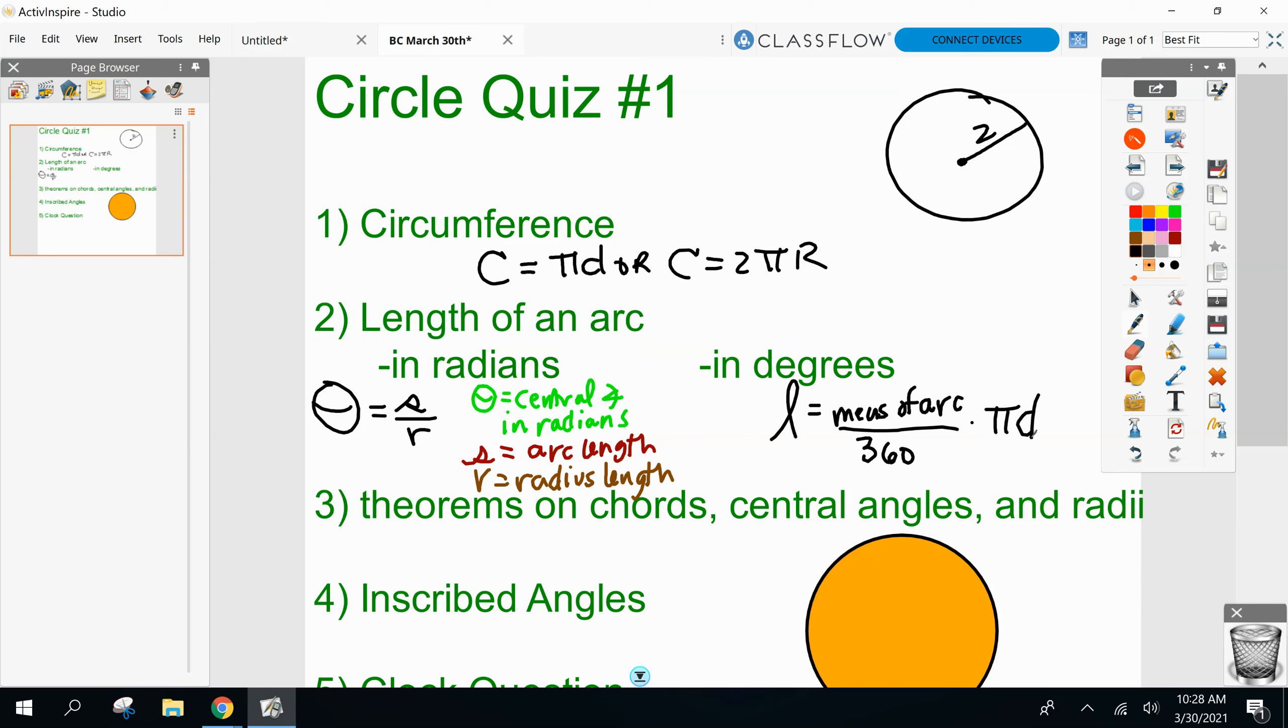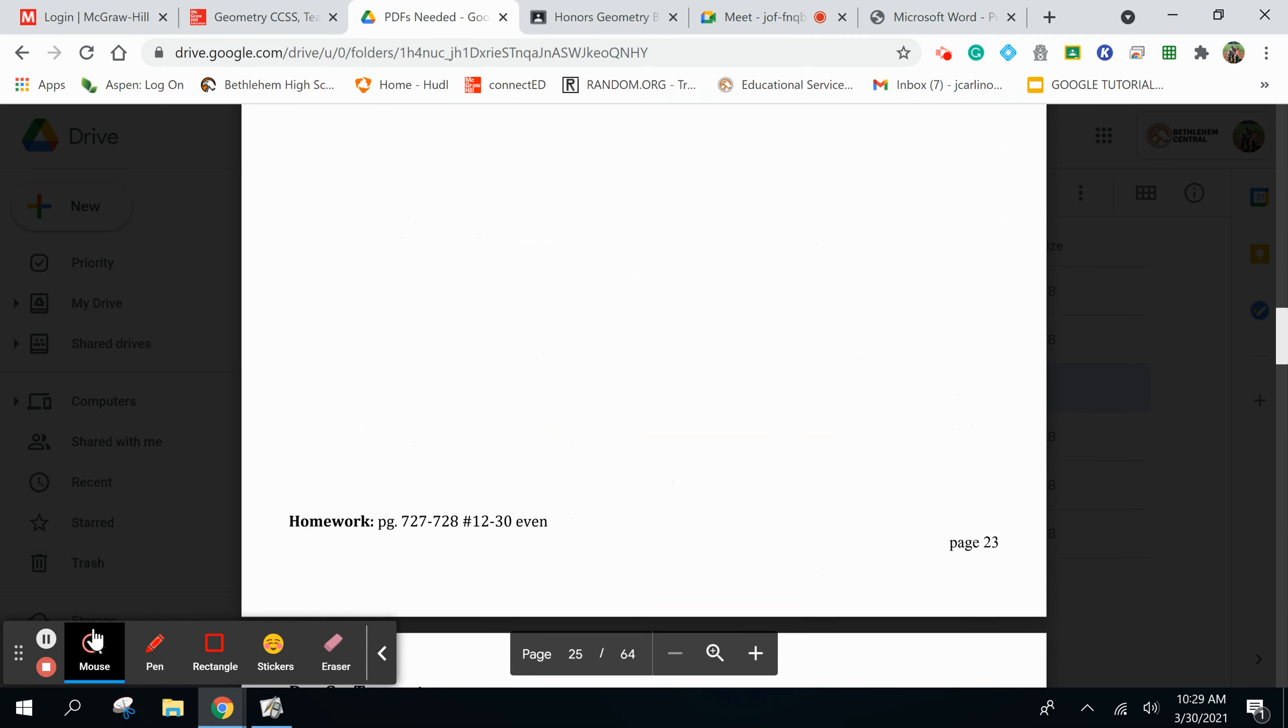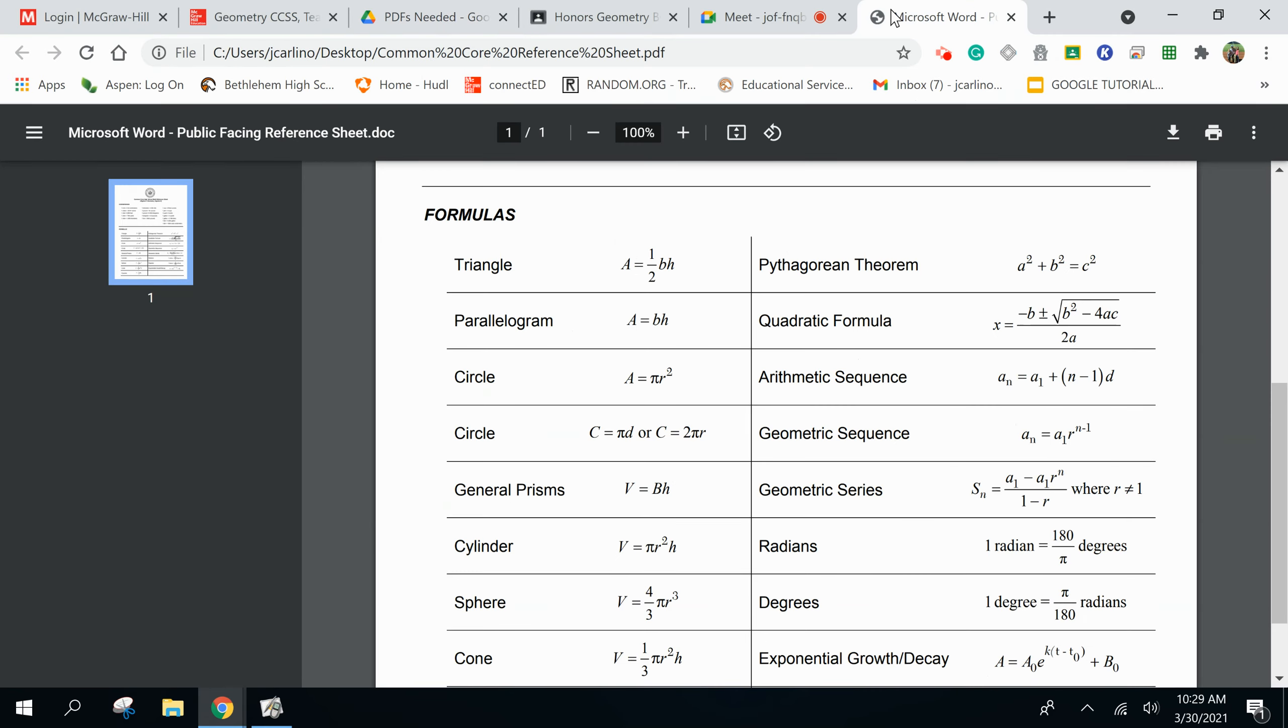Neither formula will be given to you tomorrow. I will not ask a specific question that says turn 80 degrees into radians. I'm not going to ask you any questions to convert tomorrow. But you've got to realize, if you're going into tomorrow just knowing theta equals S over R, and I give you an arc length problem that's in degrees, you better know how to convert. Anyone taking the quiz in class, I will give you an actual formula sheet. Anybody taking it on formative remotely, it will be on the top of your formative test, the conversions.